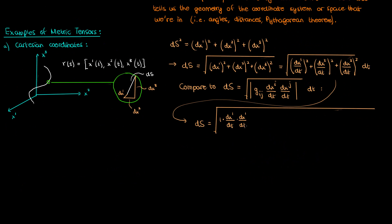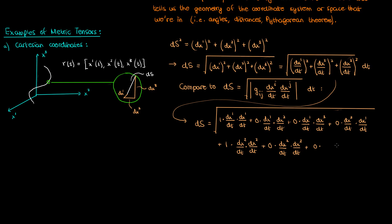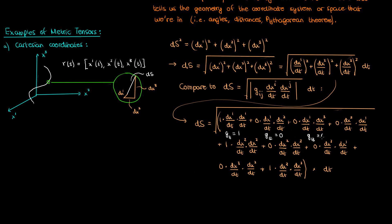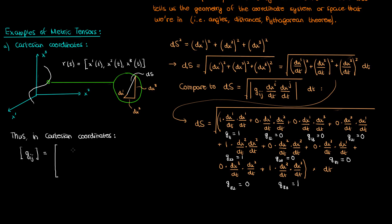To facilitate this comparison, I'll expand out the distance element in Cartesian coordinates so it best resembles the general formula. Note that in addition to the square terms, I've also included cross terms, but these cross terms have a coefficient of 0 since they don't appear in the actual Cartesian arc length expression. Making the comparison, I find that g sub 11 is 1, g sub 12, g sub 13, and g sub 21 are 0, g sub 22 is 1, g sub 23, g sub 31, and g sub 32 are 0, and g sub 33 is 1. Putting them all together, the metric tensor in three-dimensional Cartesian coordinates looks like the identity tensor. So for Cartesian coordinates the metric tensor isn't particularly interesting — it's just the identity. However, it becomes more unique for curvilinear coordinate systems.